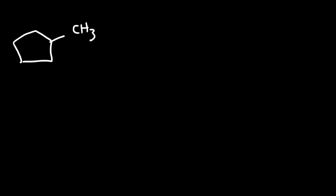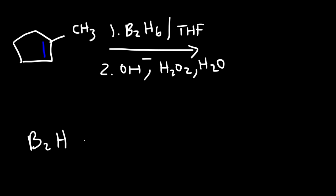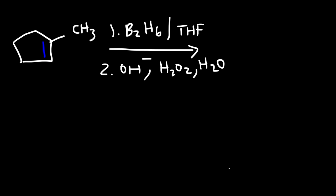Now let's go over some example problems. Let's say we have 1-methylcyclopentene and react it with B2H6 and THF, followed by hydroxide, peroxide, and water. B2H6 is simply a dimer of two borane molecules — BH3 plus BH3. We know this reaction will proceed with anti-Markovnikov regiochemistry, so the alcohol will go on the less substituted carbon atom of the double bond, which is the secondary carbon.